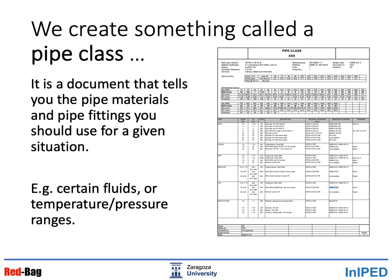We create something called a pipe class. It is a document that tells you the pipe materials and pipe fittings you should use for a given situation — for example, when you have certain fluids or when you have a given temperature and pressure range.